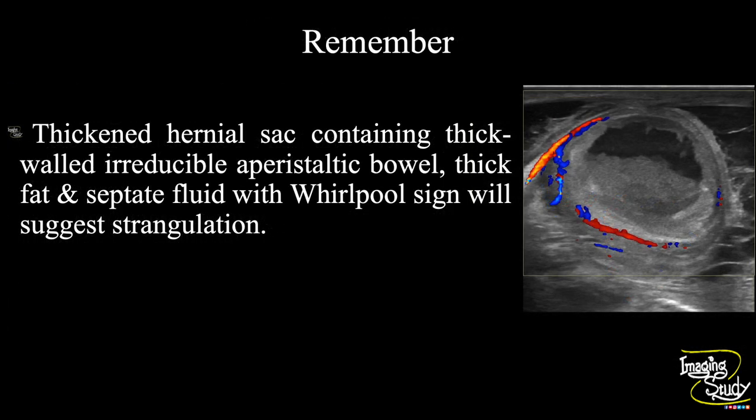Now the take-home message: a thickened hernial sac containing a thick-walled, irreducible, aperistaltic bowel with thickened fat and septate fluid, along with whirlpool sign on color Doppler, will suggest a hernia as a strangulated one.